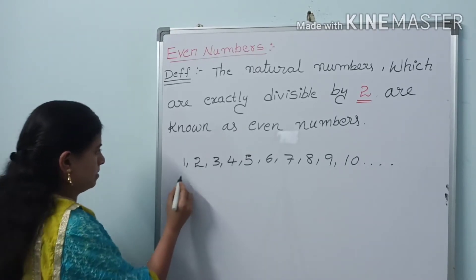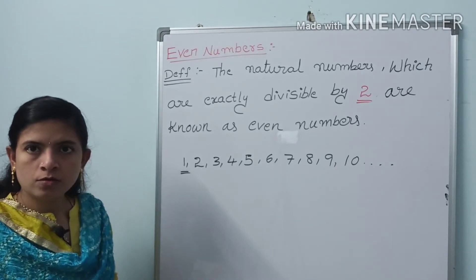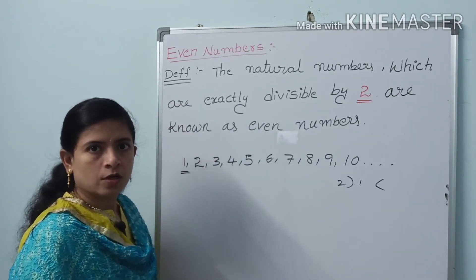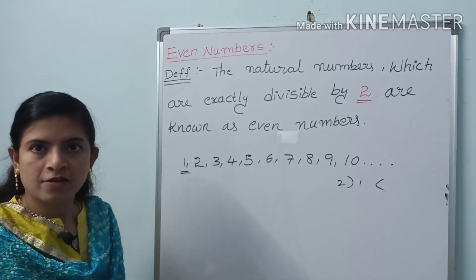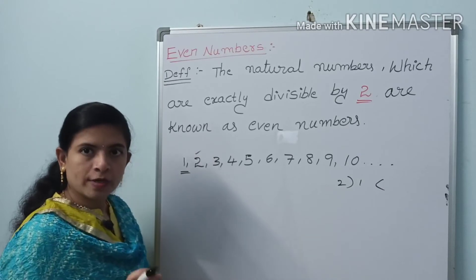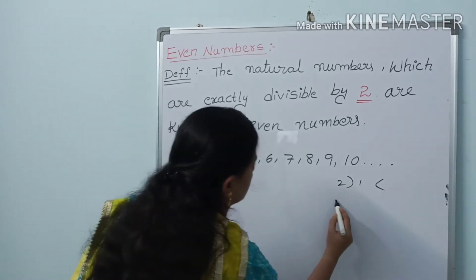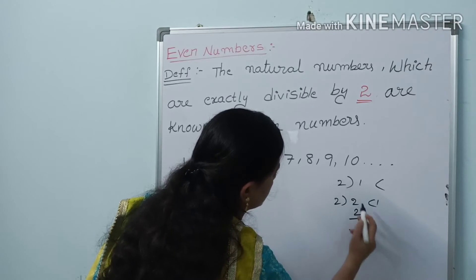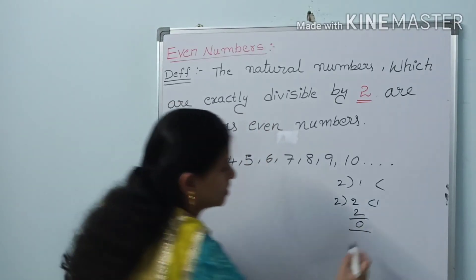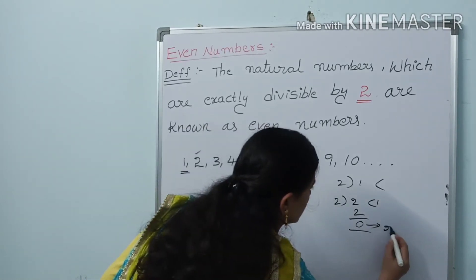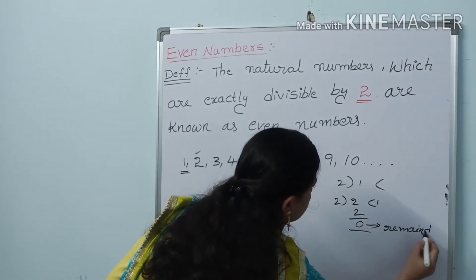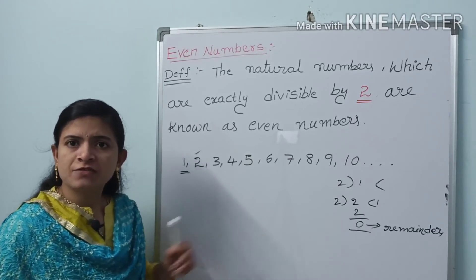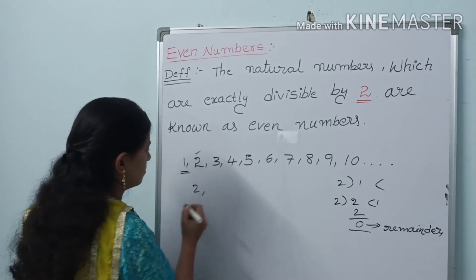For example, let us take 1. Is 1 exactly divisible by two? No. 1 is not exactly divisible by two, so 1 is not an even number. Let us take 2. Is 2 exactly divisible by two? Yes. 2 ones are 2, so 2 minus 2 equals 0 — the remainder is 0. So 2 is exactly divisible by two, and 2 is an even number.